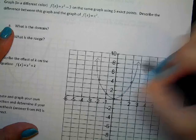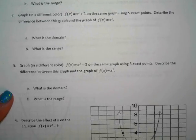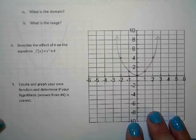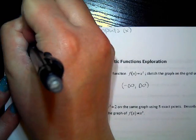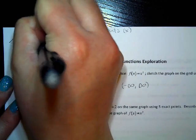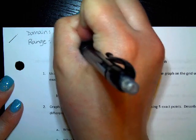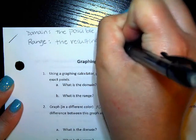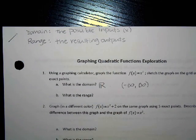Did you guys draw arrows on either end because it continued forever? Marvelous. We're ready for the next one. What is the range? So the Y values — let's write down the definition of range so we don't forget. If the domain is the possible inputs, then the range is the resulting outputs. So once you have those inputs actually input into the equation, what pops out?